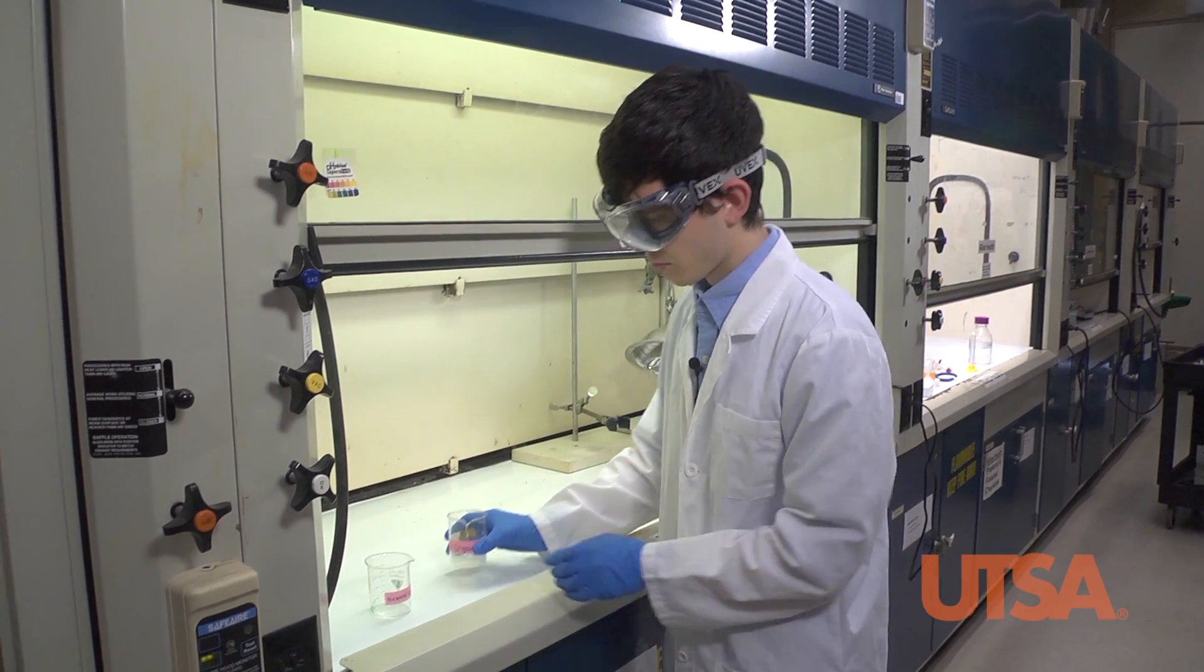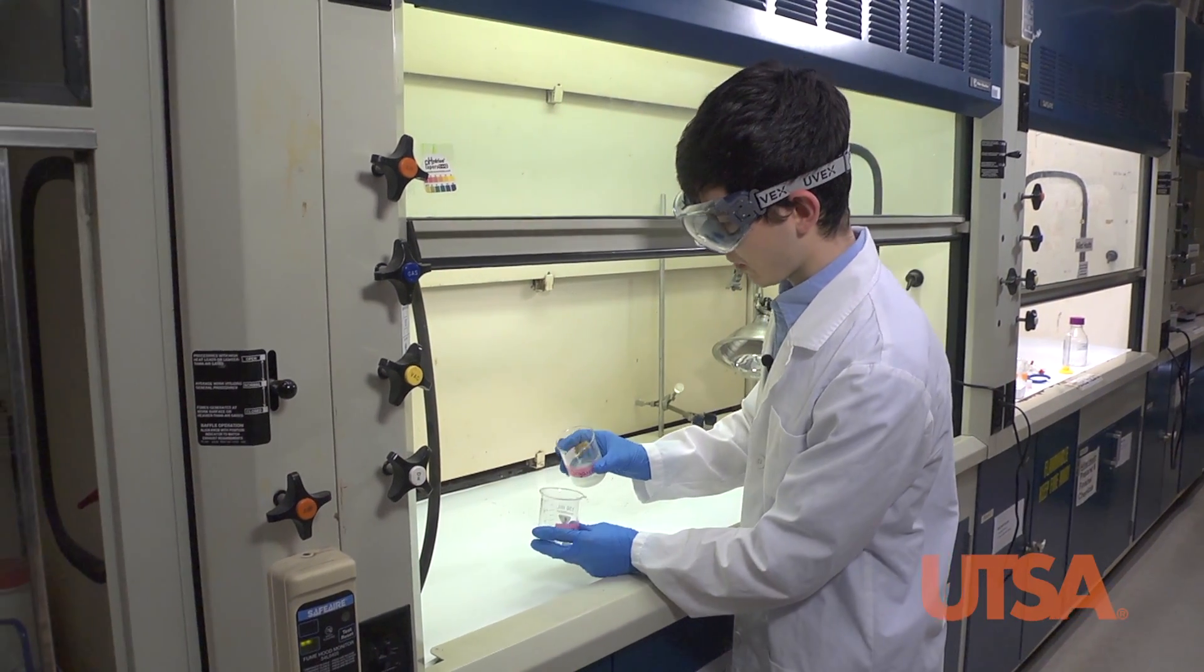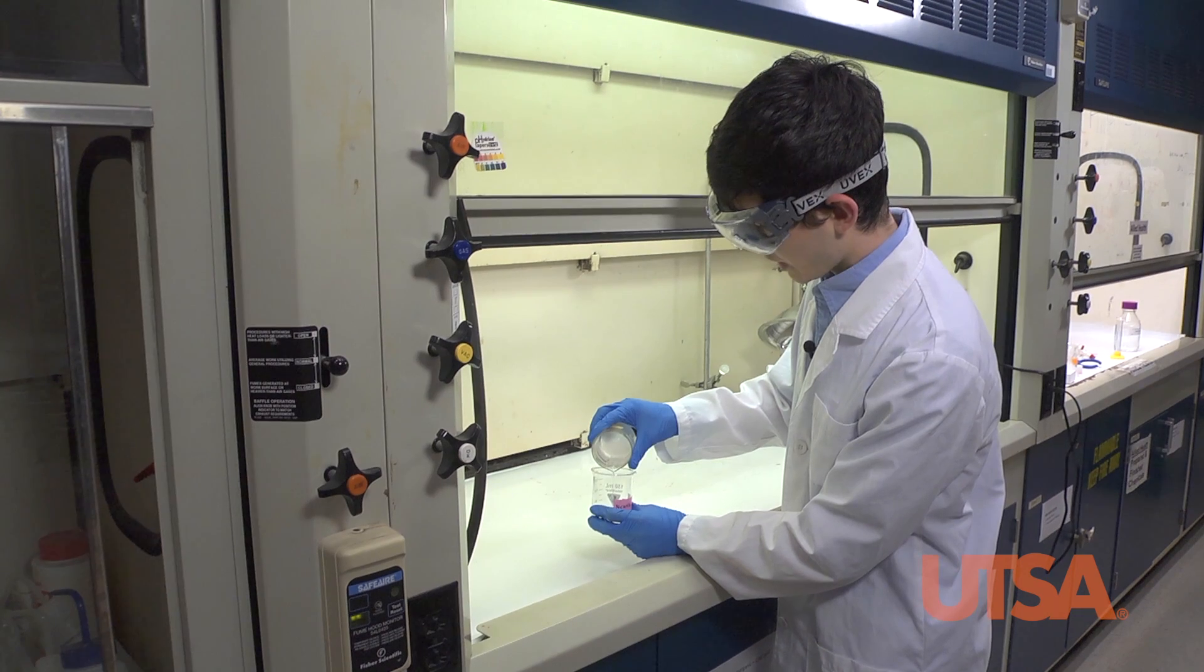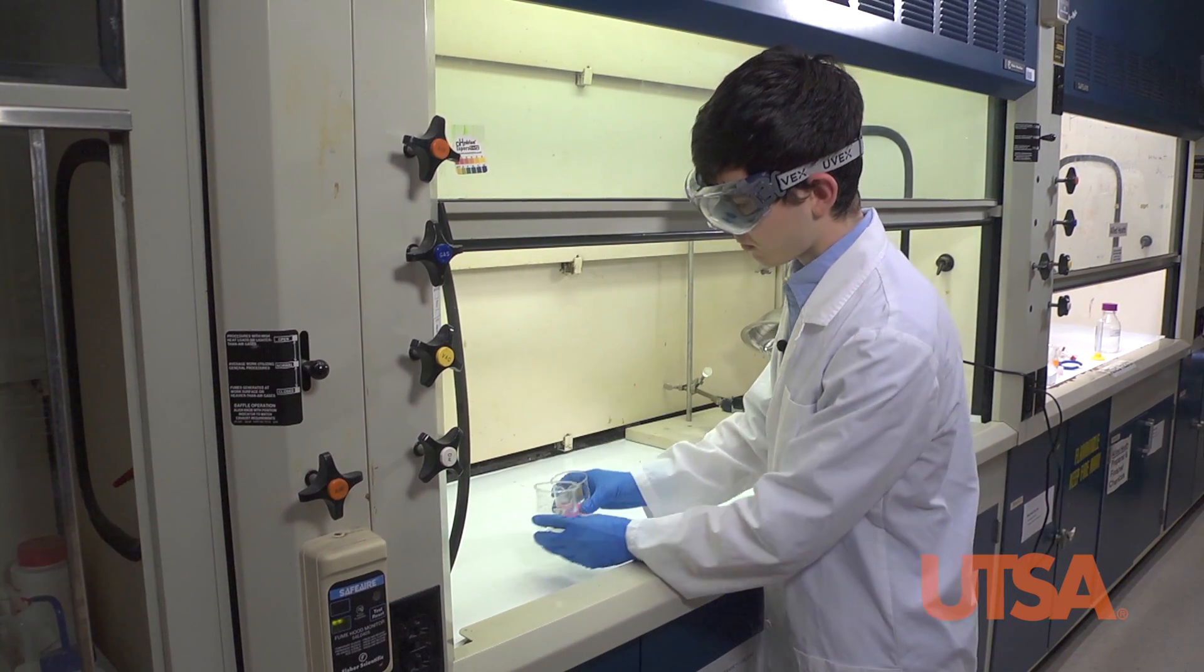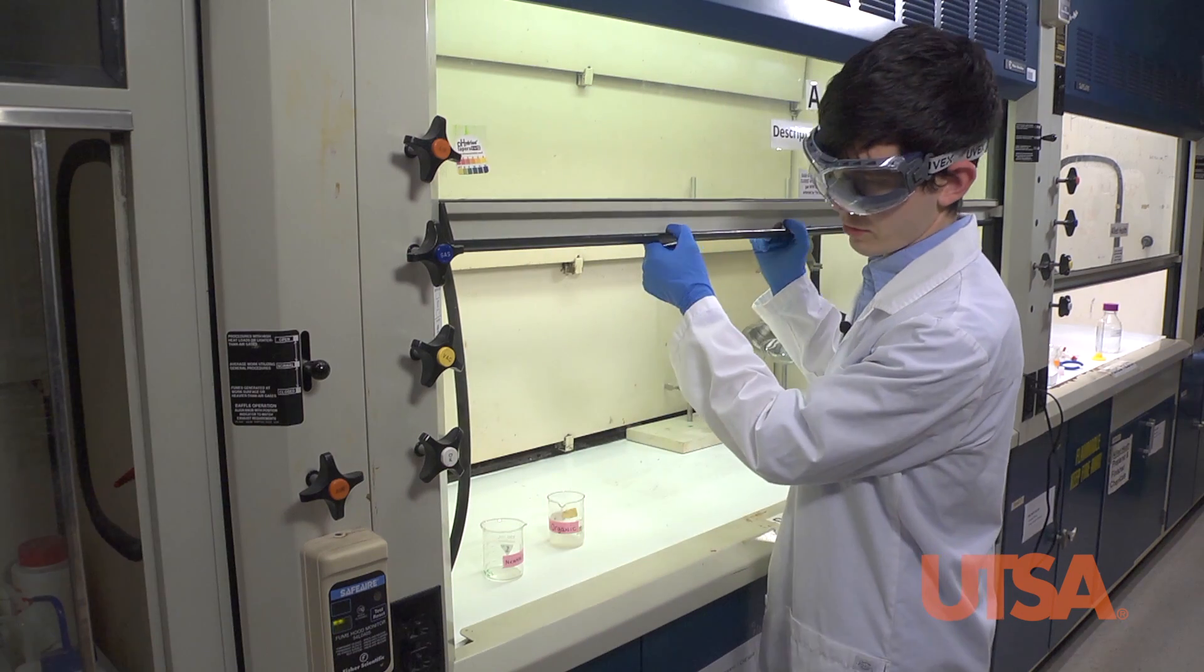Slowly decant the neutral organic into a newly labeled beaker. Use a spatula to scrape the ether, careful not to pour any of the sodium sulfate with it. Pull the hood sash down.